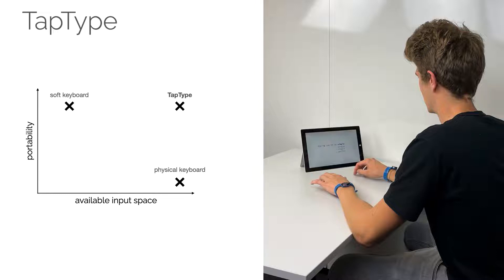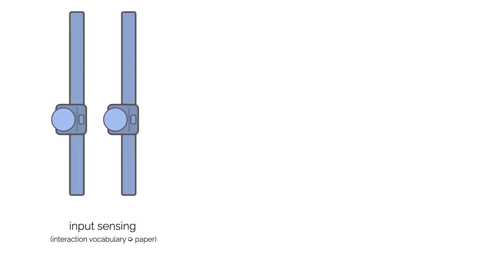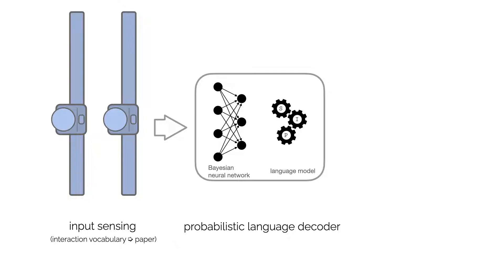Users get the same passive haptic feedback they are used to on touch devices, but they can also support and rest their arms on the surface, which allows for longer typing sessions. TapType's system consists of three main components. The first is a variable sensor design that detects typing events from soft surface taps. The second is a novel probabilistic language decoder, consisting of a Bayesian neural network and a language model, which estimates the text the user intends to enter. The third component provides the user with feedback about the predictions.